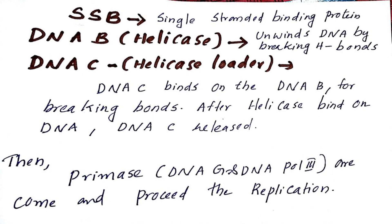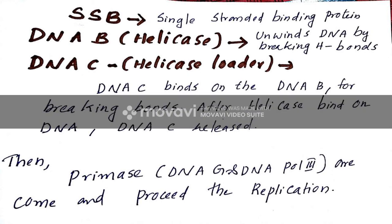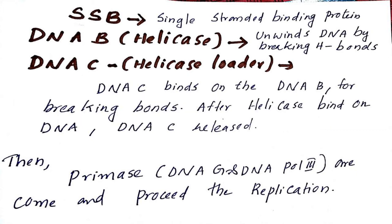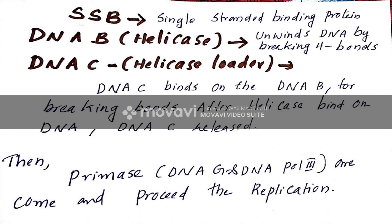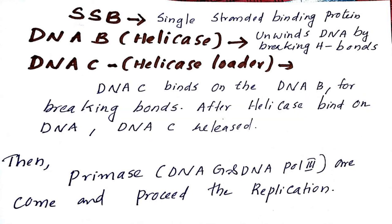DnaC is the helicase loader — it loads DnaB onto the DNA. After the helicase binds on the DNA, DnaC is released. Then primase comes, and along with DNA Polymerase III, they proceed with the replication process — that is, the elongation process. DnaG is the primase in prokaryotes.